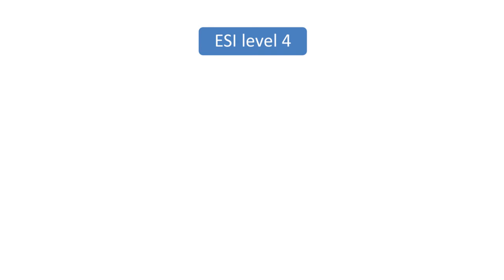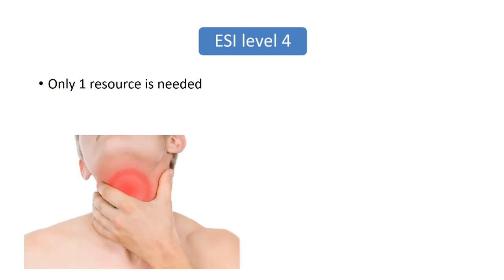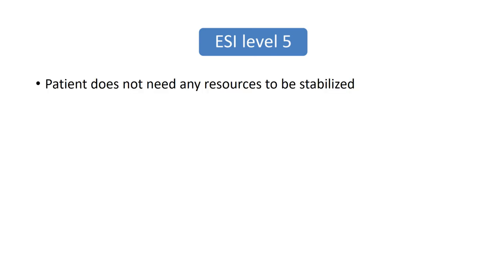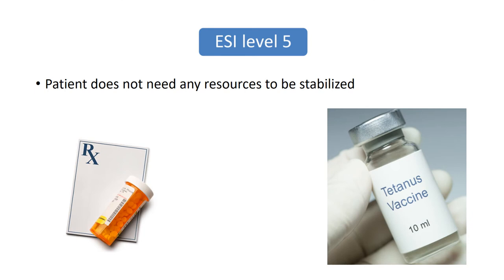Your Level 4 patients are those who only need one resource to remain stable. Remember, your resources include labs, IV meds, specialty consults, etc. An example of an ESI Level 4 patient is an otherwise healthy adult with a sore throat and fever, or a healthy teenager with a minor thumb laceration. Lastly, your patients who are Level 5 do not need any resources the ED has to offer. These patients are your medication refill patients, tetanus or other vaccine needs, and physical exam needs.